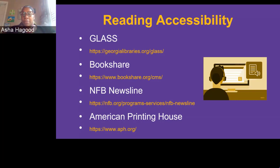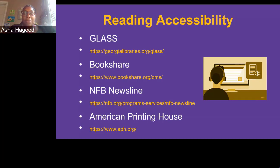Lastly, there's the American Printing House (APH), which creates educational and independent living products for people with vision impairments. They can print large print textbooks if the original vendor doesn't offer that format — and often they don't. This is the only resource with costs associated. At approximately 50 cents per page to render a textbook into larger print, it can get pricey, but it has been invaluable — for example, for a teacher whose student needed it.